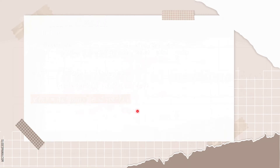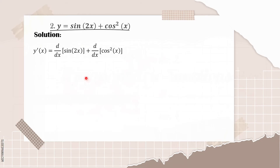Now we're going to solve our second given, which is y is equal to sine of 2x plus cosine squared of x. To do this, we need to find the derivative of sine of 2x and cosine squared of x. We need to find first the derivative of sine, then copy the 2x, and multiply it with the derivative of what's inside the parenthesis.